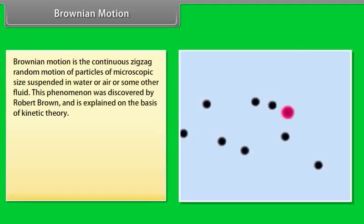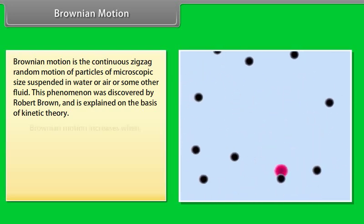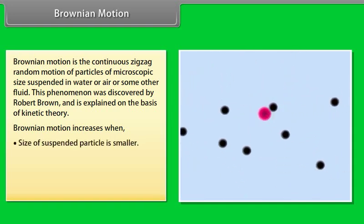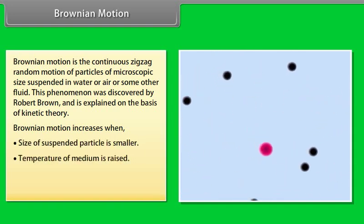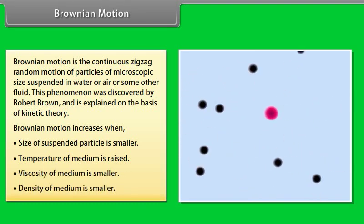Brownian motion is the continuous zigzag random motion of particles of microscopic size suspended in water or air or some other fluid. This phenomenon was discovered by Robert Brown and is explained on the basis of kinetic theory. Brownian motion increases when size of suspended particle is smaller, temperature of medium is raised, viscosity of medium is smaller, and density of medium is smaller.